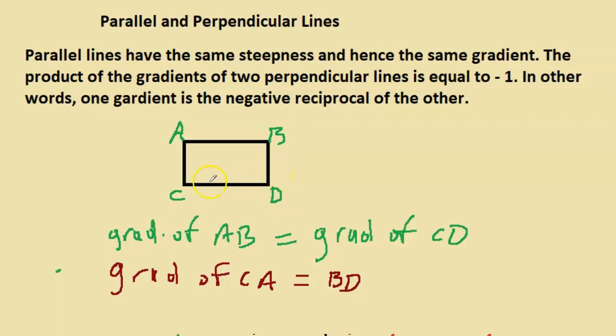And if they are perpendicular, for example, the gradient of AC times the gradient of CD would be equal to what? Based on what we have up here. And by the way, I'm going to do the proof of this in subsequent videos. So the product of the gradients of two perpendicular lines is equal to negative 1. These are perpendicular lines. Perpendicular means they meet at right angle. They are at right angles to each other. So AC is perpendicular to CD.